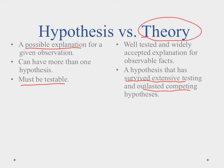Theories are well-tested and widely accepted explanations for observable facts. So a hypothesis starts off as a simple, testable explanation for what we see. And if we test it and it survives, then ultimately it will be accepted and become a theory.